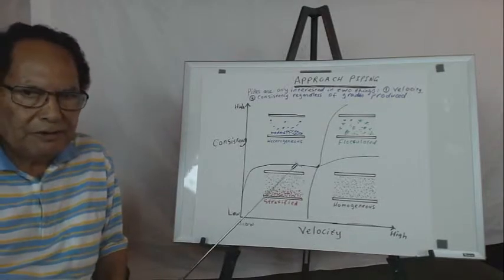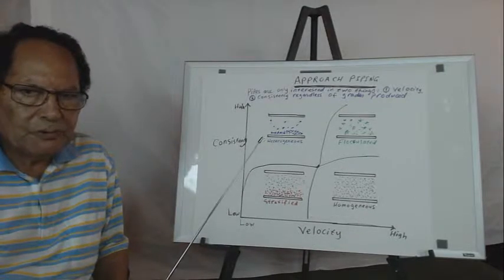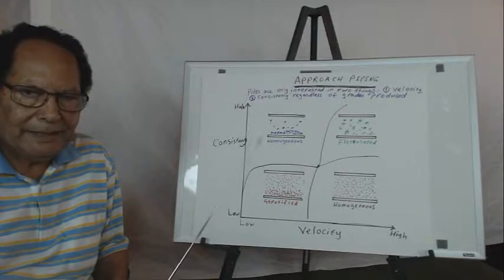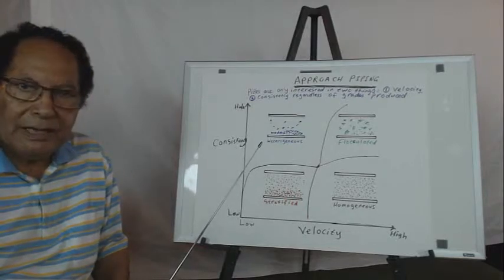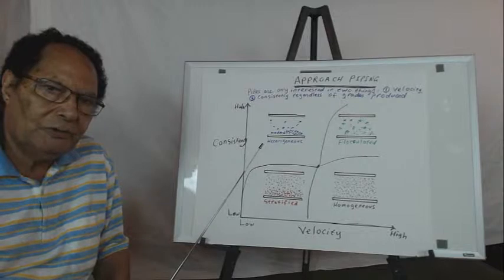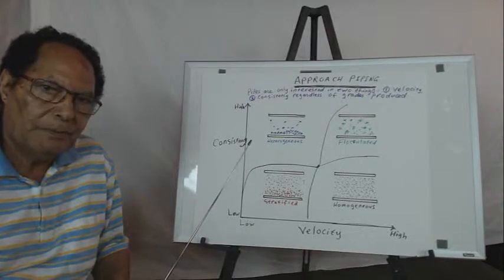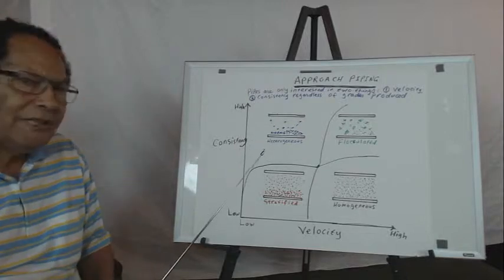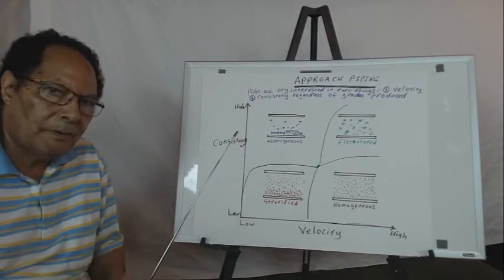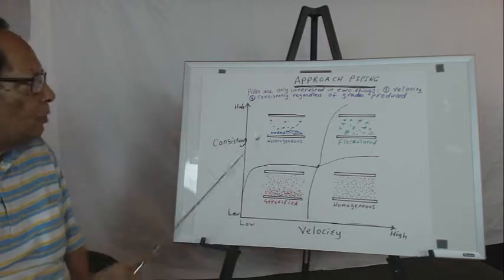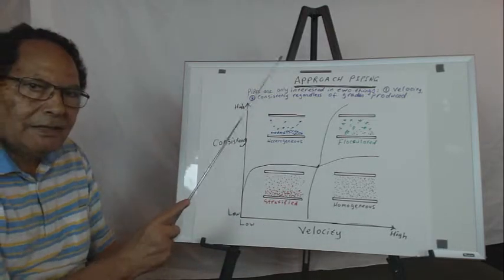In the previous videos, you were exposed in a little bit more detail about the slice area and how complex they are based on the kind of head box we are dealing with. Now I'm taking you to another area in the approach piping where you deliver that flow to the head box. What really these pipes coming from the fan pump going to the manifold, the distributor tubes and so on, they are interested in two things.